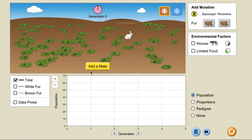Now let's see how different factors affect the population. We have three environmental factors here. One is the climate, that is the hot and the cold climate, which we can change from here. Second, we have an option to add predators like wolves. And third, we have an option to limit the food resources.